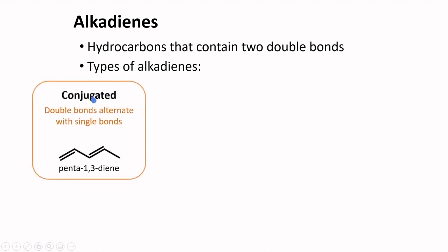Alkadienes can be conjugated, where the double bonds alternate with single bonds: here is a double bond, a single bond, then a double bond. The name of this compound is penta-1,3-diene.